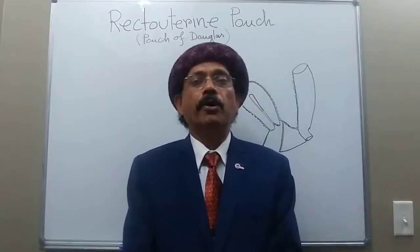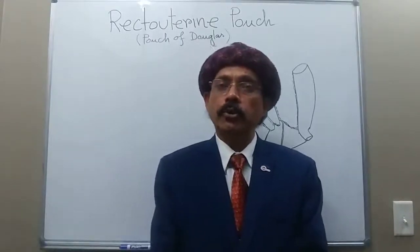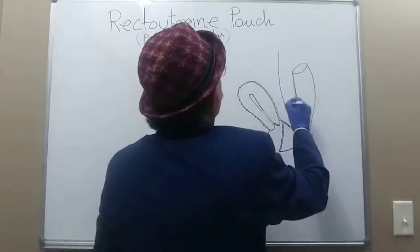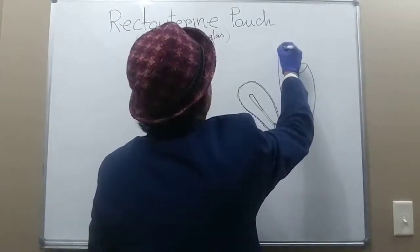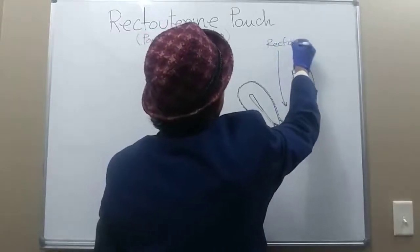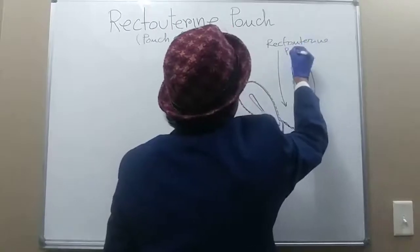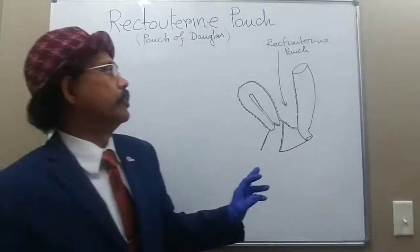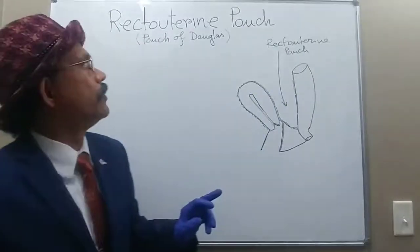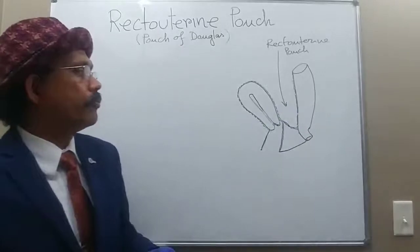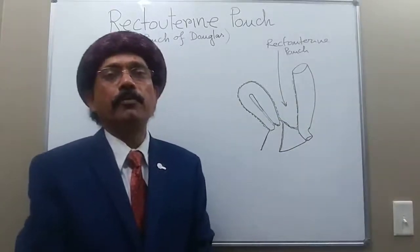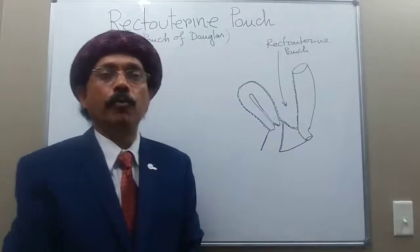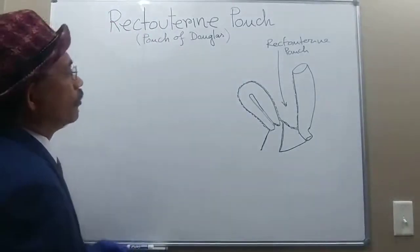It is the most dependent part of the pelvic cavity in the supine position. The recto-uterine pouch, also called the pouch of Douglas, is a pouch between the rectum and the uterus. It is the most dependent part of the peritoneal cavity in the upright position and most dependent part of the pelvic cavity in the supine position.